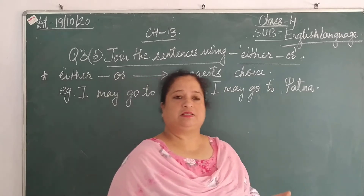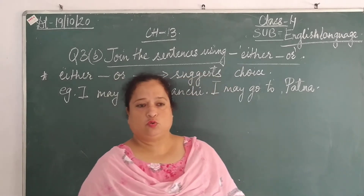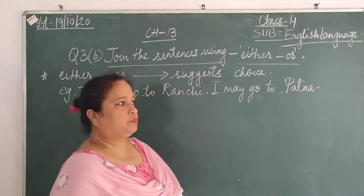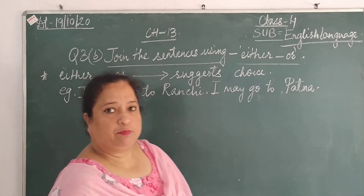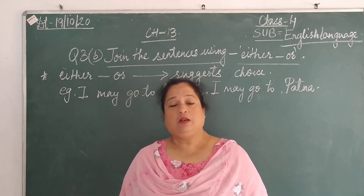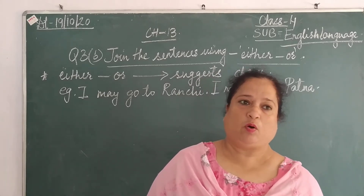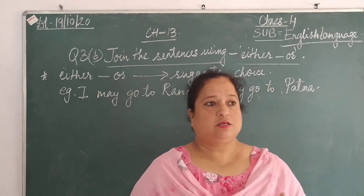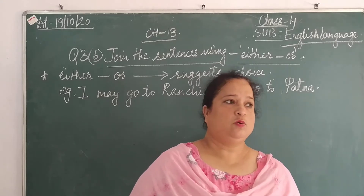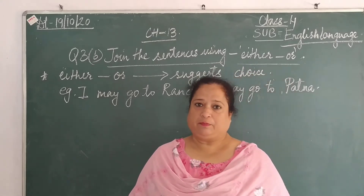It means two things are given to you and you choose what you would prefer to do. For example, I would like to play football. I would like to play basketball. In this, two sports are given to you and you are supposed to choose out of them.